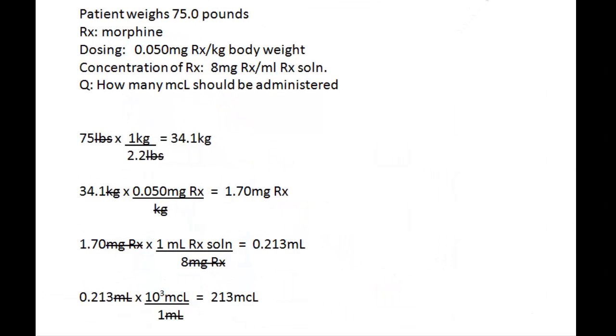Here's another problem where we need to calculate the amount of drug for a patient. In this case, the patient weighs 75 pounds, and the drug is morphine. The dosing is 0.05 milligrams per kilogram of body weight, and the concentration of drug in the solution is 8 milligrams per milliliter of solution. So we follow the same pattern, or the same steps.